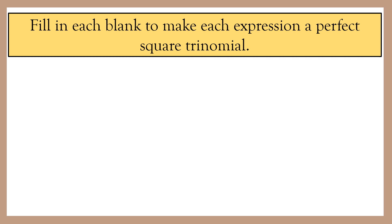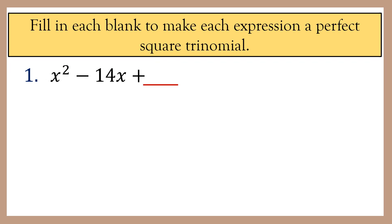Before we factor perfect square trinomials, let us first answer this: fill in each blank to make each expression a perfect square trinomial. Number 1: x squared minus 14x plus blank. The third term is missing, so how do we find the value of the third term?